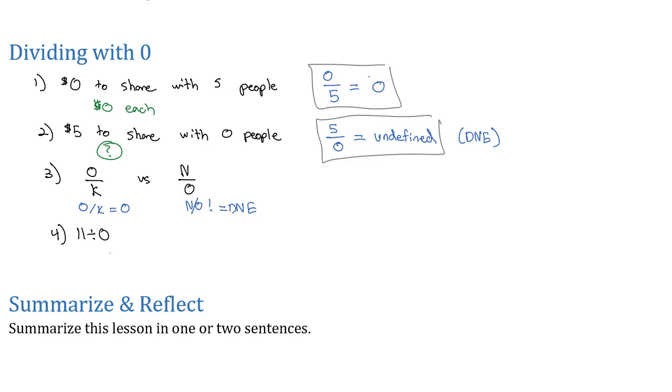Let's do 11 divided by zero. That would be the same as saying, okay, we're going to take 11 and divide it by zero people. That's NO, the zero is in the bottom. That is not allowed. So we say that does not exist.